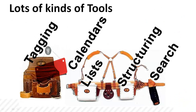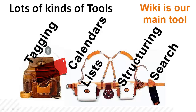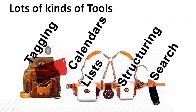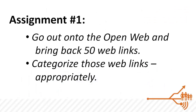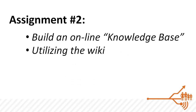Tagging is a kind of tool, creating lists is a kind of tool, structuring things — these are all different tools. There's no single exact way to do it; you could use a word processor, you can use a wiki. We're going to show you this different tool set with all these possibilities, and then you'll start to feel comfortable with them. But for now, in our classroom setting, let's just use the wiki as our main tool. We've talked about two assignments: one that has you collect links, and the second where you create a knowledge base. These are the beginnings of our assignments.